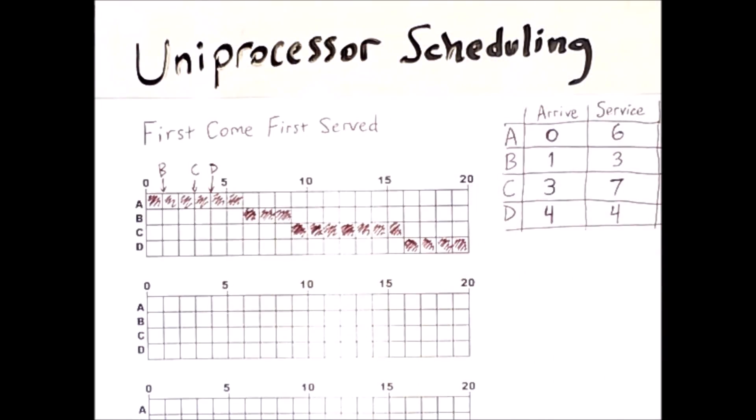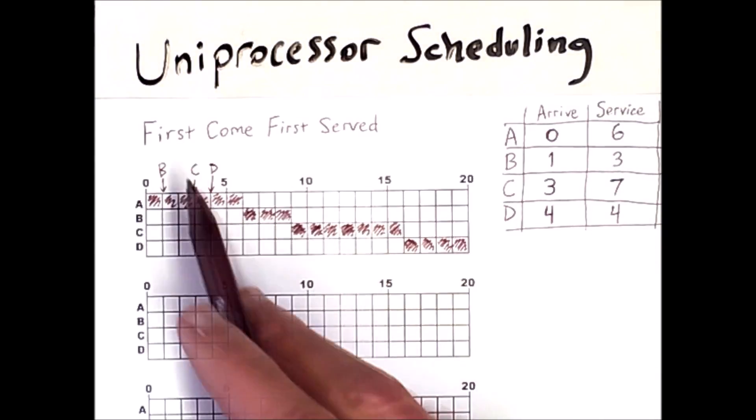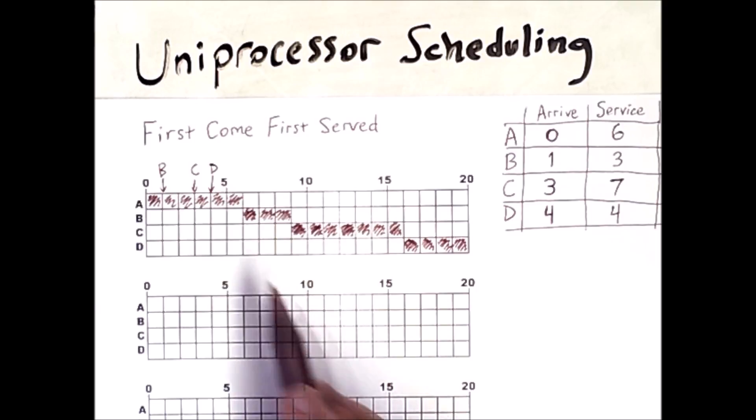Once again this is the simplest scheduling algorithm. A downside of first come first serve is that processes may have to wait a long time before they can even start.